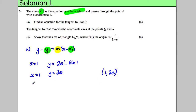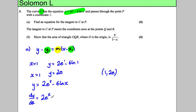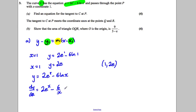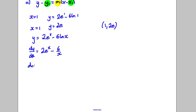Now we need the gradient. With y = 2eˣ - 6ln(x), dy/dx = 2eˣ - 6/x, since eˣ differentiates to eˣ and ln(x) differentiates to 1/x. Evaluating at x = 1: dy/dx = 2e¹ - 6/1 = 2e - 6. That's our gradient.